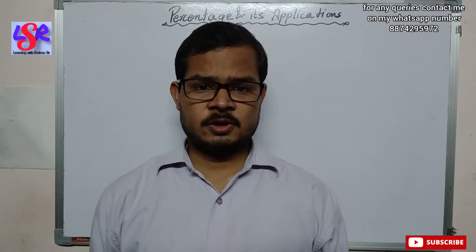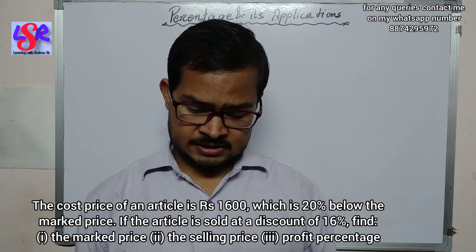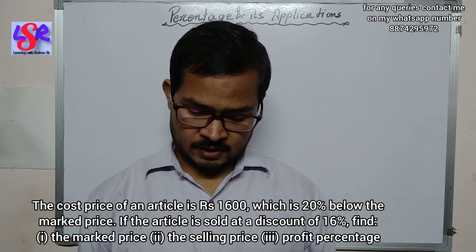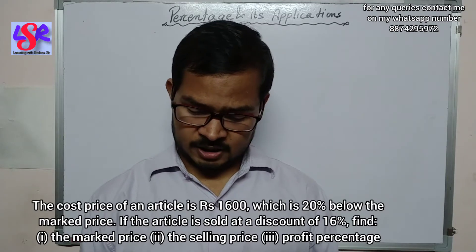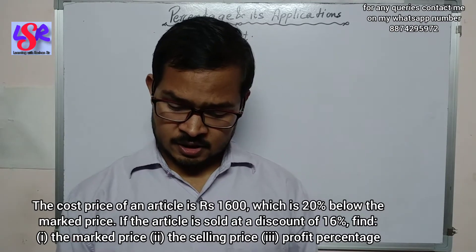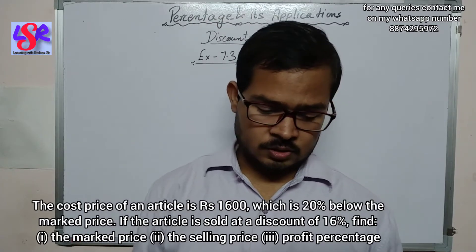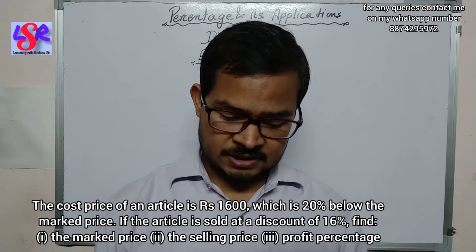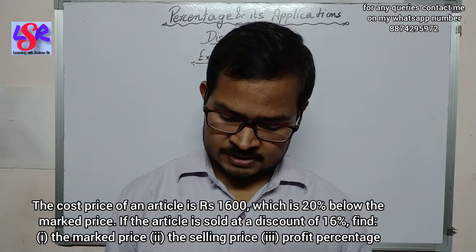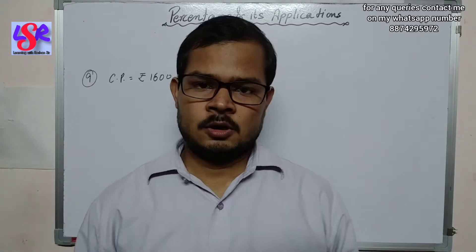In question number 9, the cost price of an article is rupees 1600, which is 20% below the marked price. If the article is sold at a discount of 16%, find the marked price, the selling price, and the profit percent.